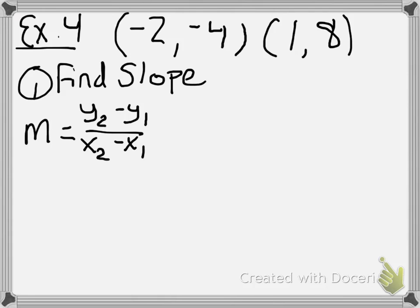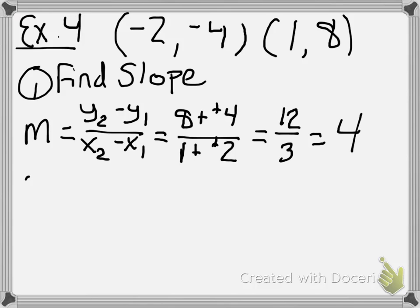I'm going to use (1, 8) first. So I'm going to do 8 minus negative 4 over 1 minus negative 2. Now first thing I'm going to do, that double negative, I hate it, so I'm going to turn it into plus plus. And we get 12 over 3, which is just 4. So I know the slope now.